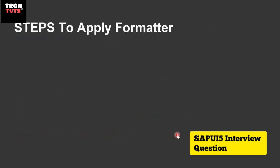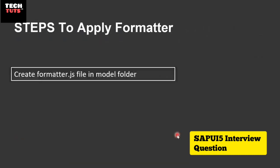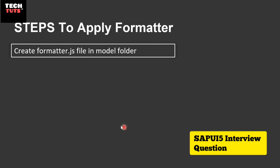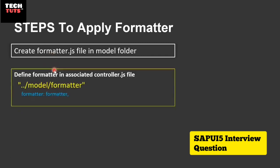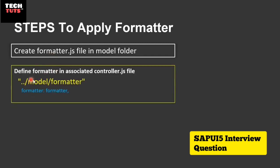To create a formatter function we need to follow the following steps. The first step is to create a formatter.js file in the model folder, and then define the formatter in the associated controller.js file.